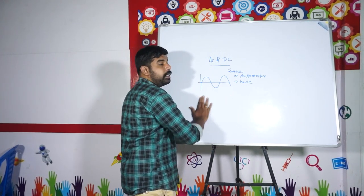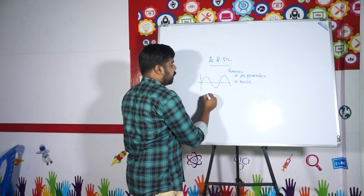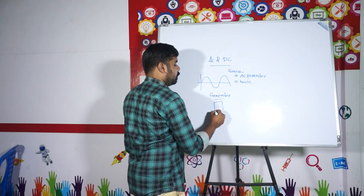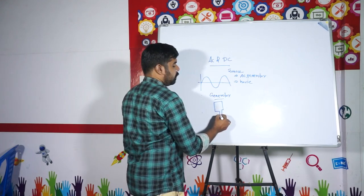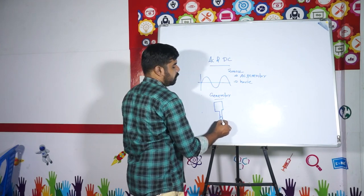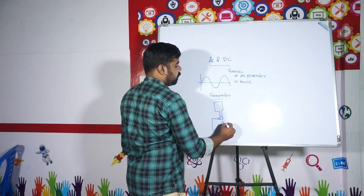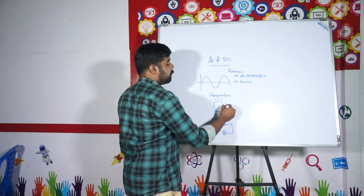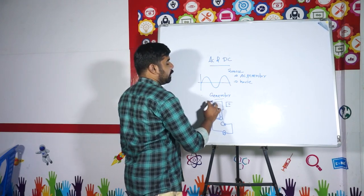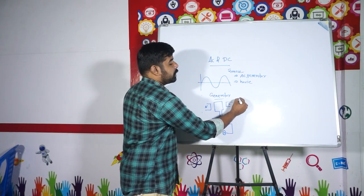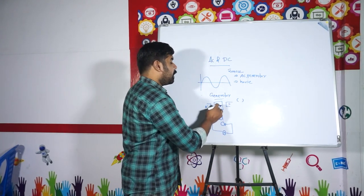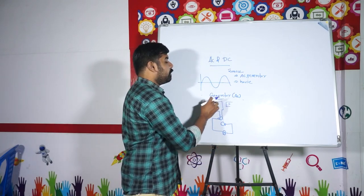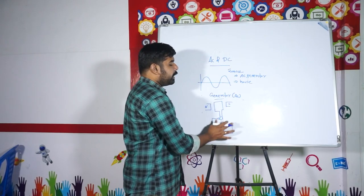Now let's look at the generator diagram. We have to use the brush B1 and B2, the carbon brush, the North and South pole magnet, and the armature coil. For an AC generator, we use slip rings. For a DC generator, we use a split ring.